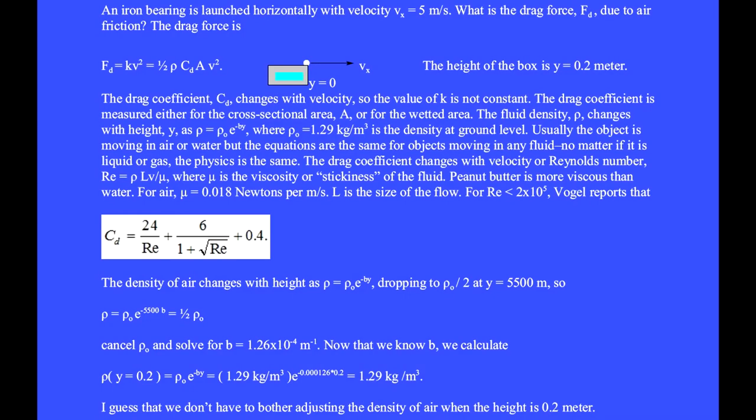The height of this box is y equals 0.2 meters. An iron bearing is launched horizontally from the top of the box with velocity v sub x equals 5 meters per second.